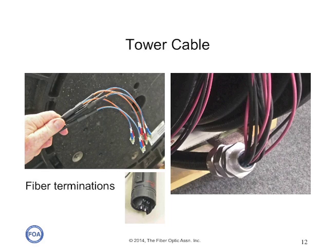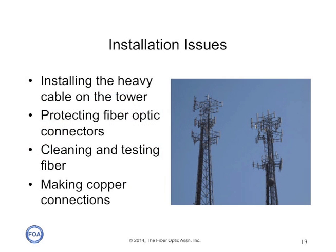Some cables that plug directly into equipment may use connectors inside a ruggedized sealed housing, as you can see in the small photo in the center of the slide. Installation issues are straightforward: you have to be careful installing the heavy cable as you lift it up the tower and lash it in place, you have to protect the fiber optic connectors, clean them carefully and test them, and you have to make the copper connections inside the distribution boxes.